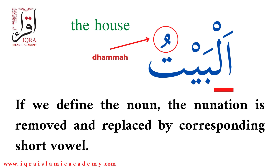We can see in this page: al-baitu. Al is added to the noun 'bait', and we translate it as 'the house'. Al-baitu means 'the house'. We say al-baitu when the bait we are talking about is definite or specified to the speaker. The nunation is removed and replaced by the corresponding short vowel, damma.